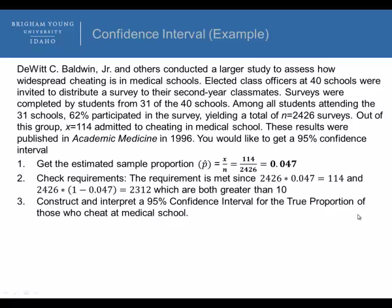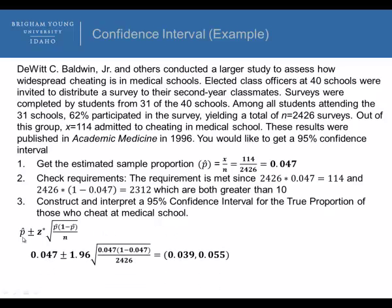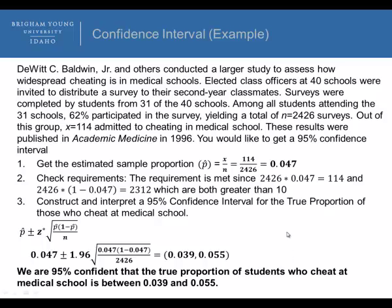Thirdly, we want to construct and interpret a 95% confidence interval of the true proportion of those who cheat at medical school, or at least those who would admit to cheating in medical school. How we would set that up is we'd use this formula here, and what we would do is that we could take the sample proportion, plus or minus the critical value, 1.96 for a 95% confidence interval, times the square root of our sample proportion, 0.047 times 1 minus that sample proportion, divided by our sample size, to get our confidence interval. And so how we interpret that is we're 95% confident that the true proportion of students who cheat at medical school, or who would at least admit to cheating at medical school, is between 0.039 and 0.055.